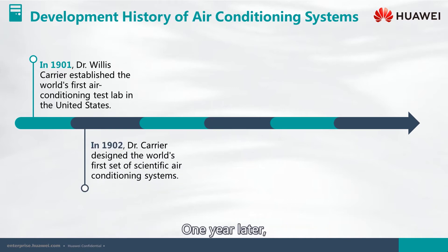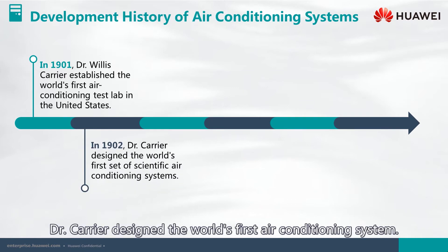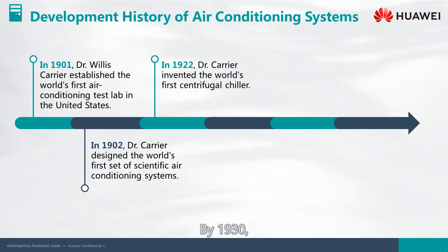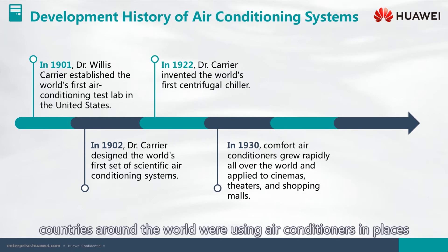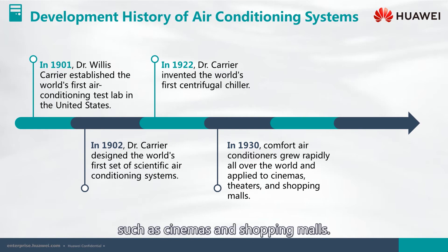One year later, Dr. Carrier designed the world's first air conditioning system. By 1930, countries around the world were using air conditioners in places such as cinemas and shopping malls.